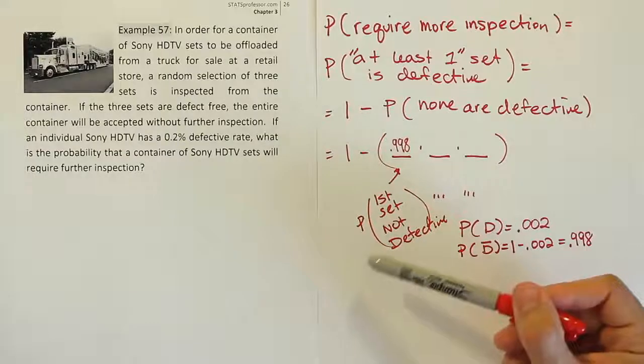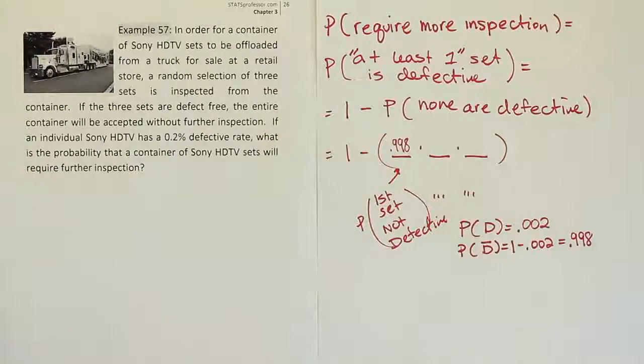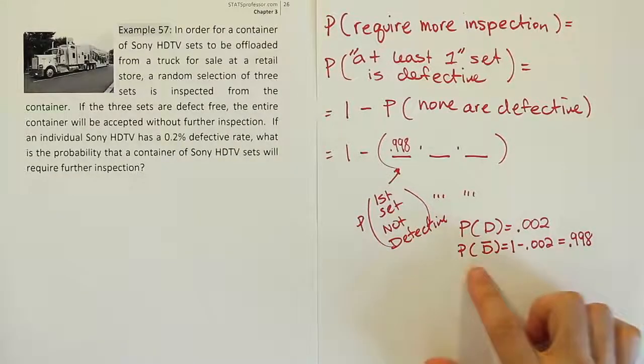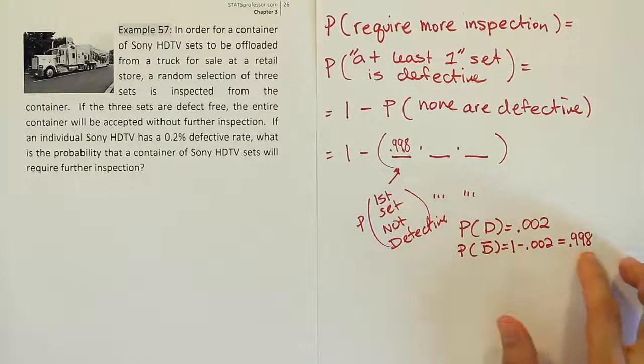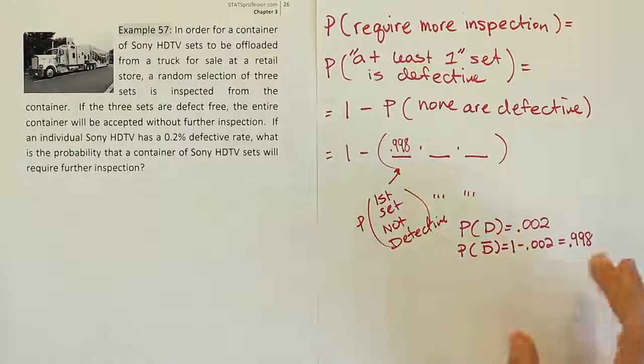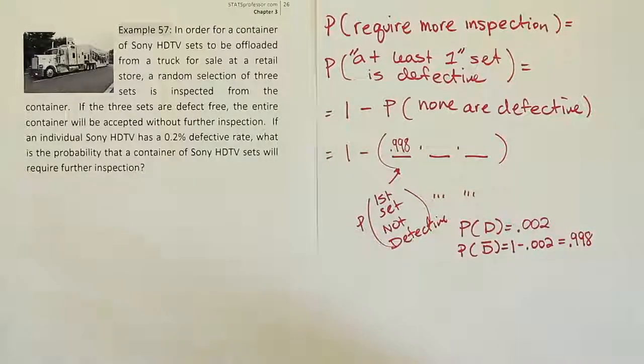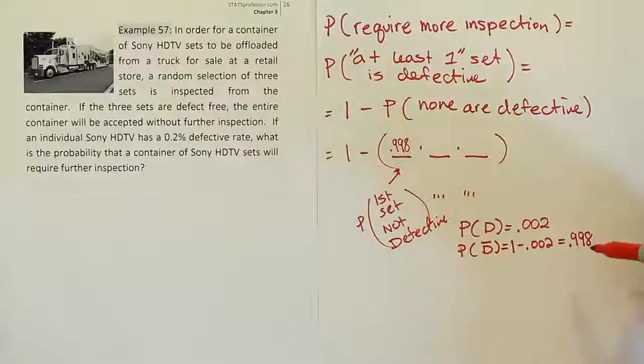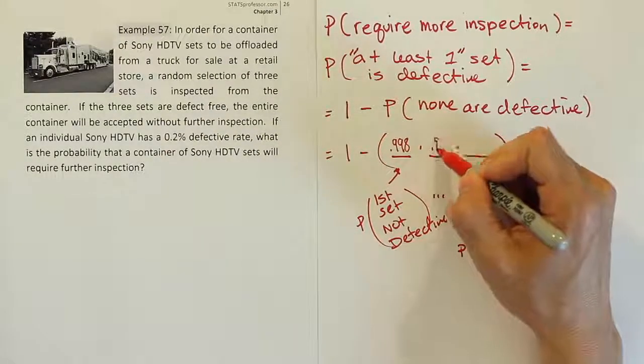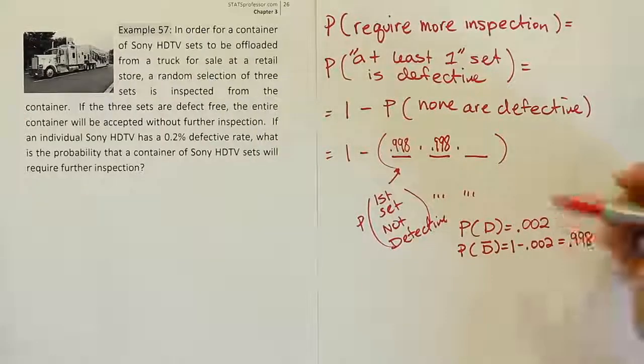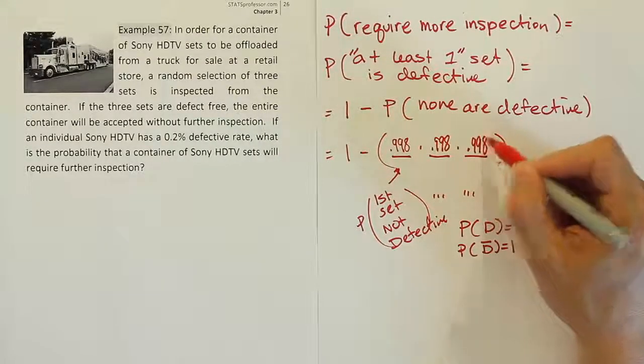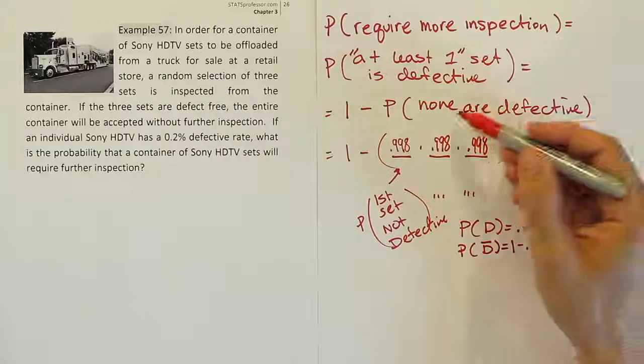So what we can do is we can treat this as if there are independent selections. So in other words, pulling 1 out of 100 is not going to make a big impact on the probability. So we can just leave it as a 99.8% good set ratio in the truck. We can continue to use this probability over and over again. So for the second set, the probability that it's not defective will remain 0.998. And likewise, for the third set, the chance that it's not defective is 0.998. And so that's the chance that all three sets are not defective.